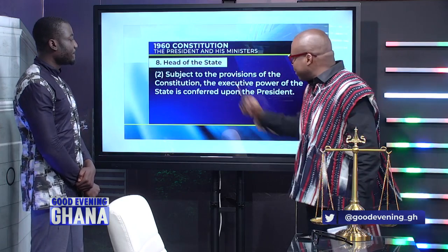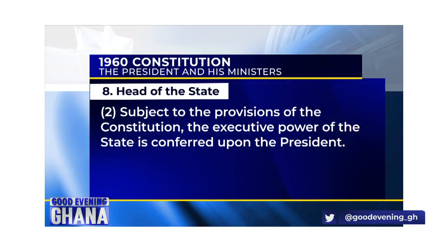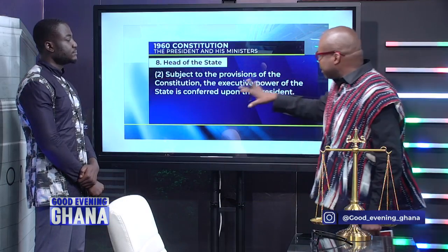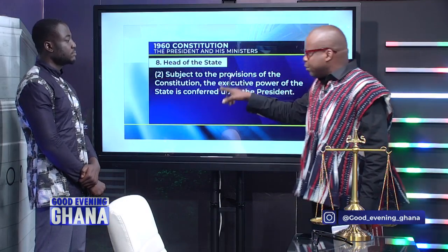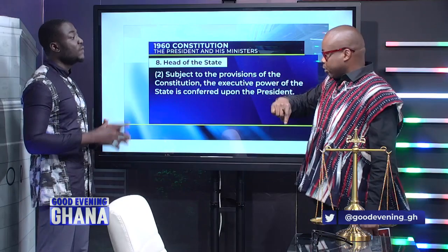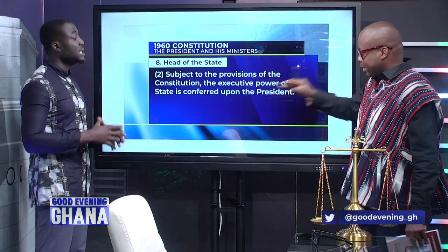Article H2 states: 'Subject to the provisions of the constitution, the executive power of the state is conferred upon the president.' That's very interesting. It says 'subject to the provisions of this constitution.' This is similar to the current constitution — the combined effects of Articles 57 and 58 of the 1992 Constitution vest executive power in the president, subject to the provisions of the constitution. Very much the same.